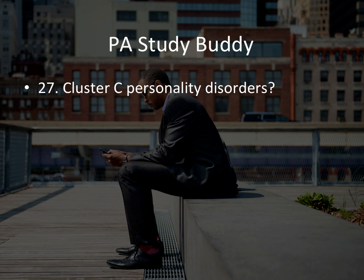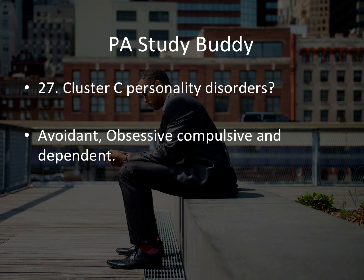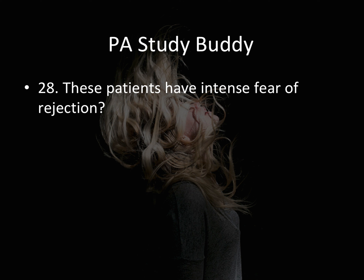Question twenty-seven: cluster C personality disorders — avoidant, obsessive-compulsive, and dependent. Classic cluster C. These patients have an intense fear of rejection. They'll tell you they've been in long relationships, putting up with a lot just to stay because they don't want to be alone — they feel rejection more than anything else. This is a perfect description of avoidant personality disorder.